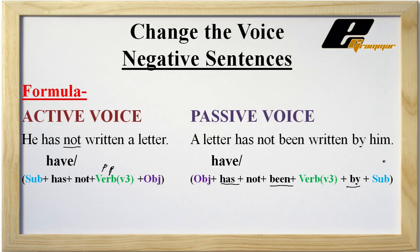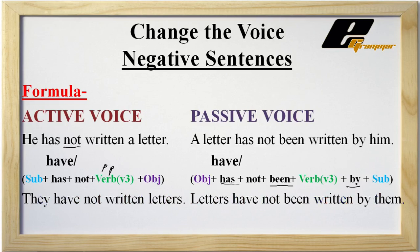Now take a look at an example where the object is plural: 'They have not written letters.' In passive voice: 'Letters have not been written by them.' We use 'have' because the object 'letters' is plural.